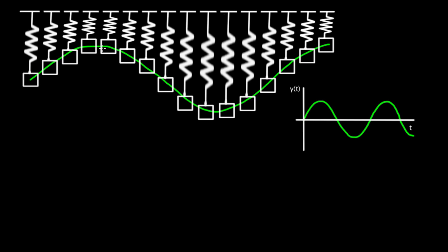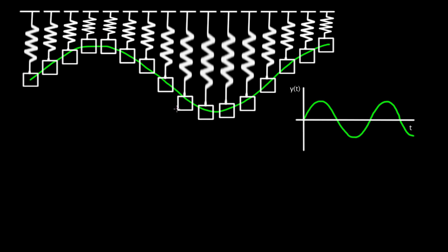Let's say we didn't start the mass in the middle and give it a kick upwards. Let's say at t equals zero, we start the mass all the way at the top and we let it drop. In other words, we do this. We start the mass up here. We let it drop.